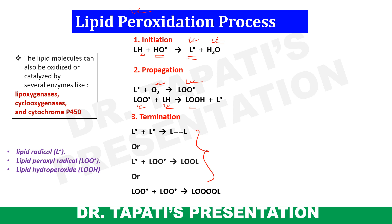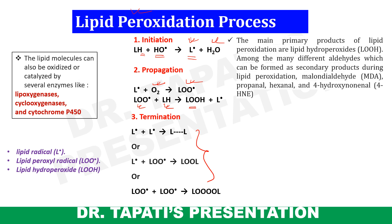The free radical reactions can also be halted by antioxidants within an organism, which bind to the free radicals and prevent lipid peroxidation. Lipid molecules can also be oxidized or catalyzed by several enzymes like lipoxygenase, cyclooxygenase, and cytochrome P450.